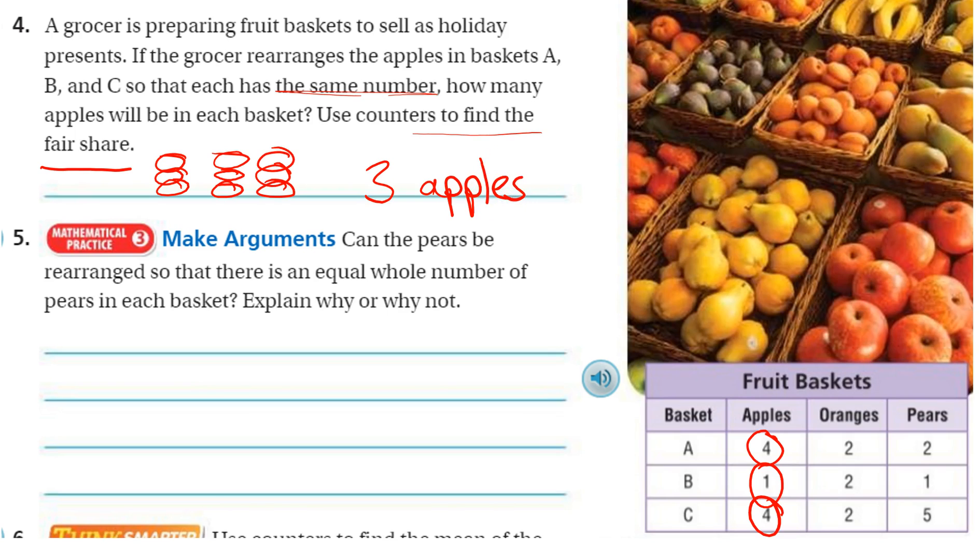Hey, number five. Can the pears be rearranged so that there is an equal whole number of pears in each basket? Explain why or why not. So let's look at the pears. We have two, one, and five. So let's add those all up.